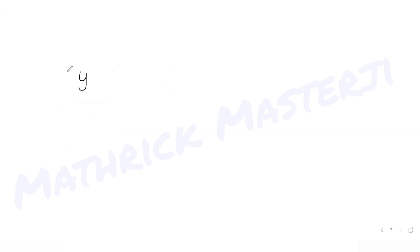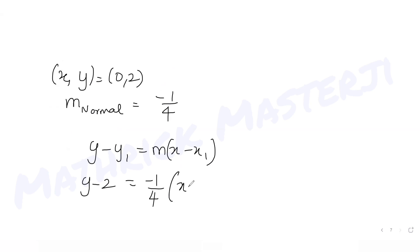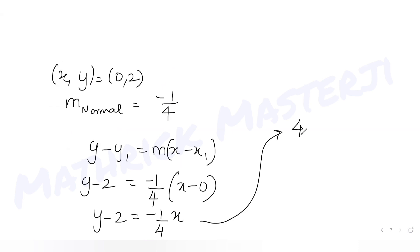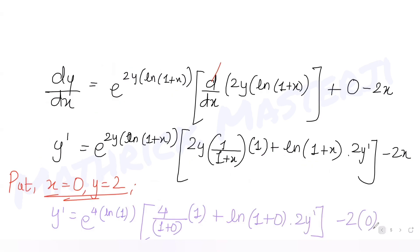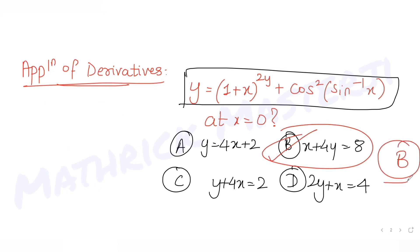Now I find the equation of the normal at point (0, 2) with slope -1/4. Using y - y₁ = m(x - x₁): y - 2 = -1/4 · (x - 0), which gives y - 2 = -x/4. Multiplying through by 4: 4y - 8 = -x, so x + 4y = 8. This matches option B, which is the correct answer.